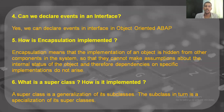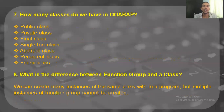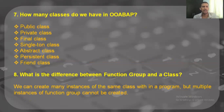What is a superclass and how is it implemented? A superclass is basically a generalization of its subclasses, and the subclass is in turn a specialization of a superclass. How many classes do we have in object oriented? We have around six or seven: public class, private, final, singleton, abstract, persistent, and friend class. We would be looking at more classes and covering them in detail as we go further.